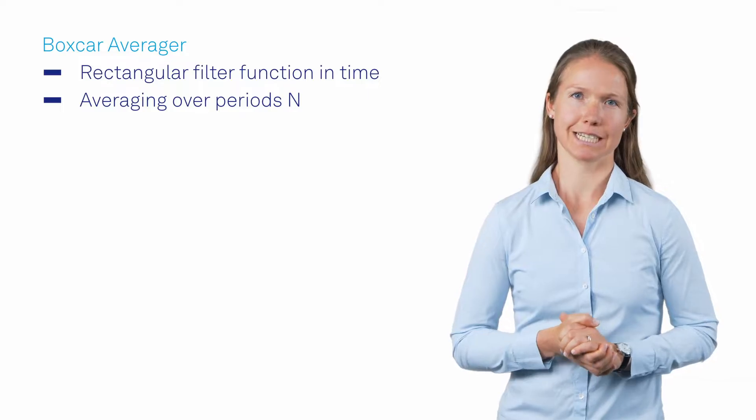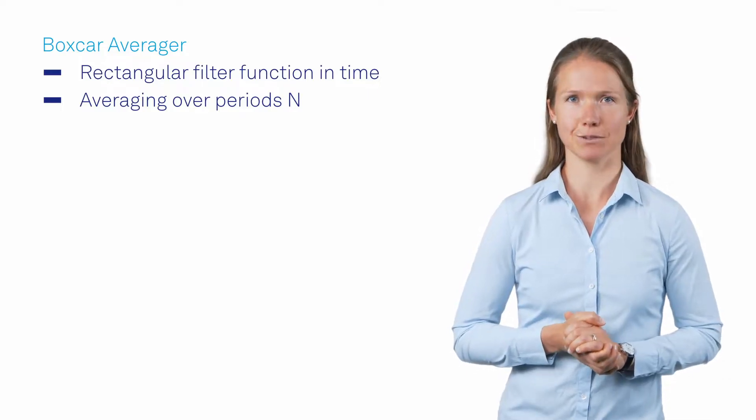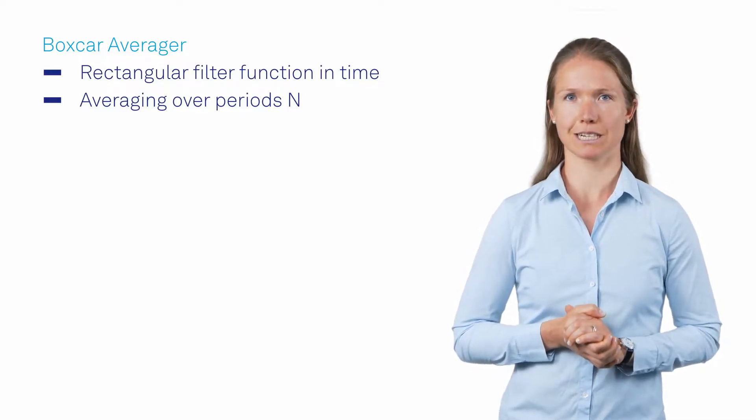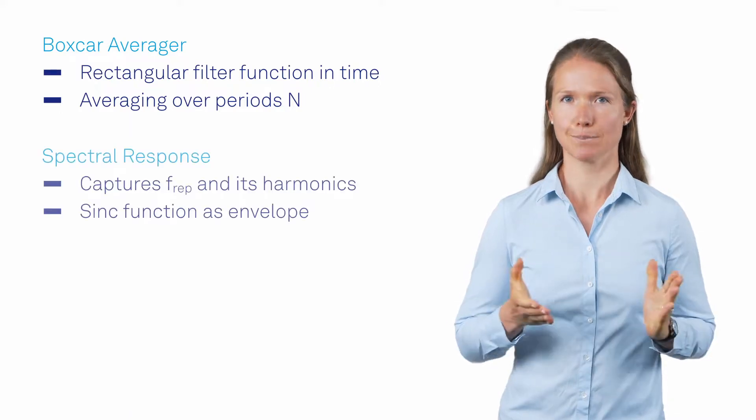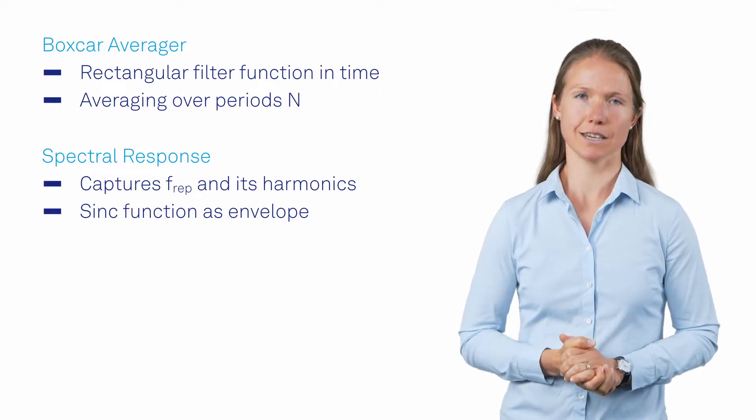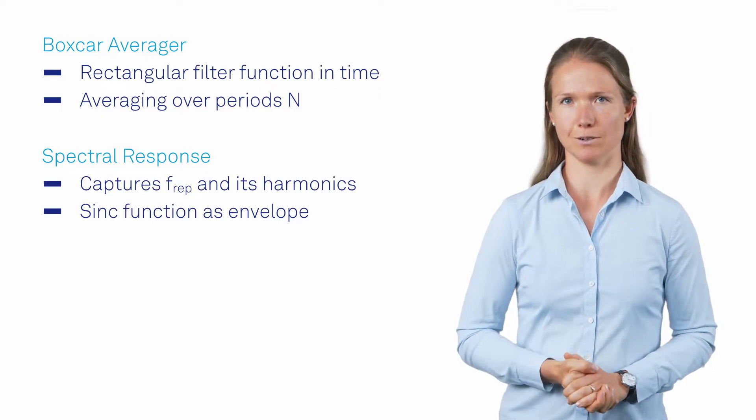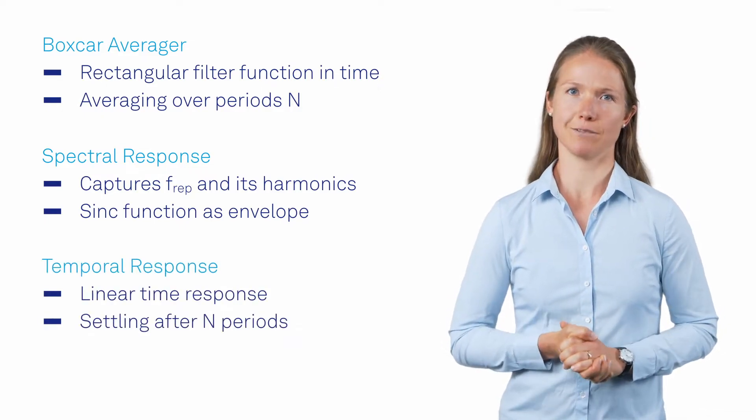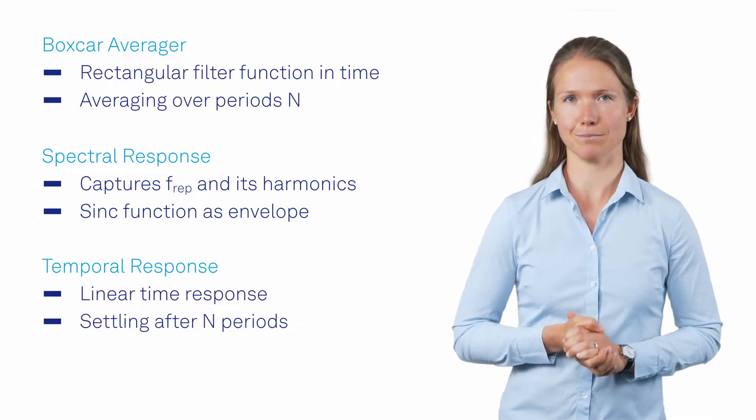Let me summarize. The boxcar averager is a rectangular window function in the time domain defined by the boxcar window width. Its spectral response corresponds to the sum of the repetition rate and its harmonics, with a sinc function as an envelope. The result of the averaging settles after exactly N periods.